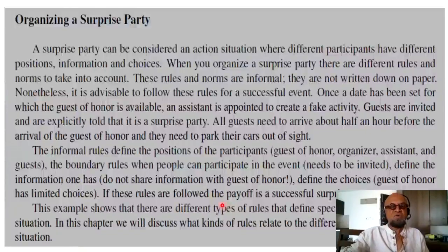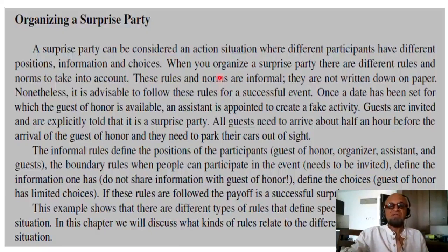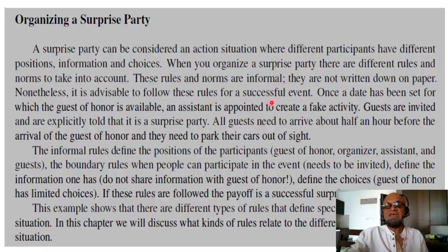So let's look at classifying the rules. Let's start with an example — an action situation with some rules: organizing a surprise party. A surprise party can be considered an action situation where different participants have different positions, different information, and different choices to make. When you organize a surprise party there are different rules and norms to take into account. These rules and norms are informal — they are not written down on paper — nonetheless it's advisable to follow these rules for a successful event where the surprise is real and felt by the person who is the target.